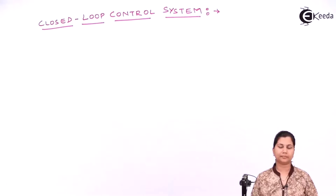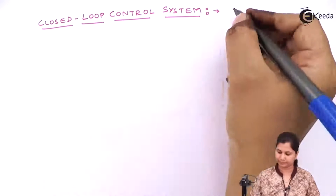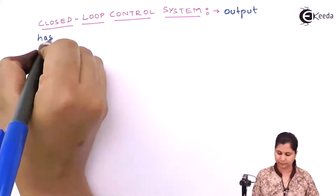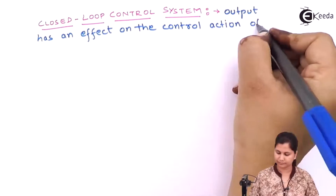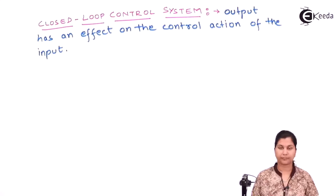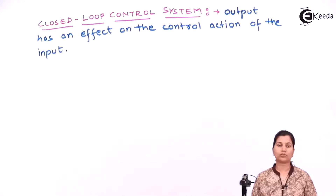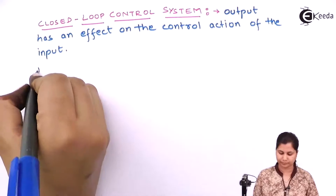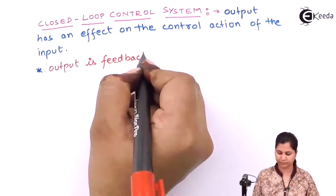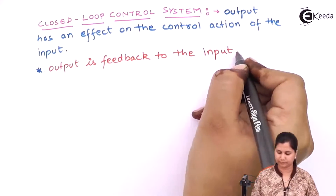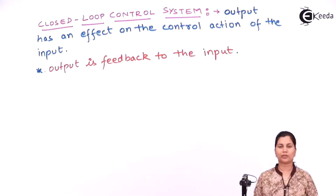In a closed loop control system, the output has an effect on the control action of the input. That is, in the closed loop control system the output is fed back to the input. That is why closed loop control systems are also known as feedback systems.